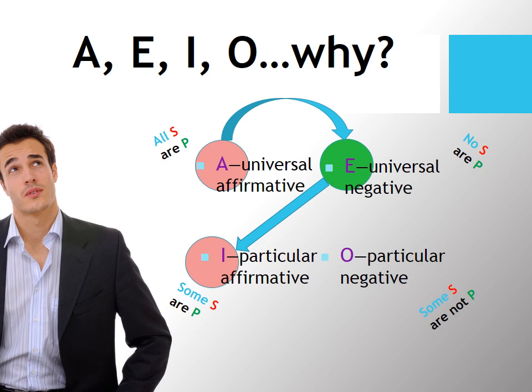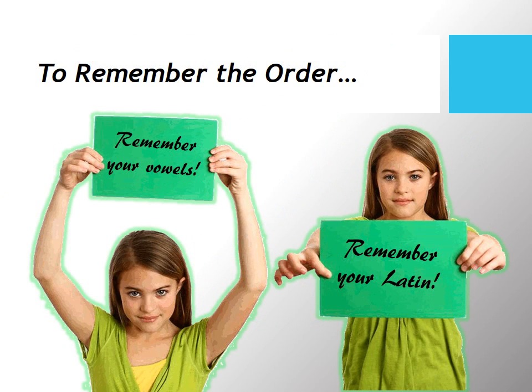And actually, they drew another relationship. If they saw that some S are P is false, they drew the conclusion that some S are not P, for reasons that we'll go into in the next lecture.